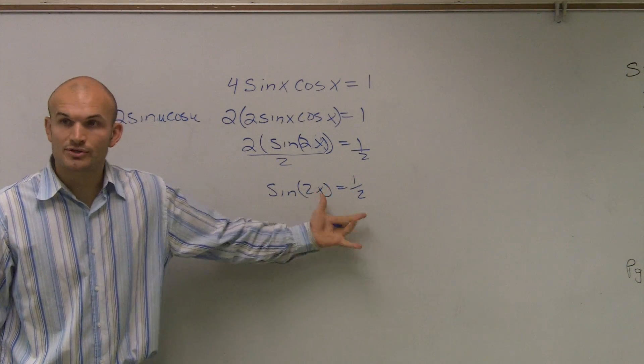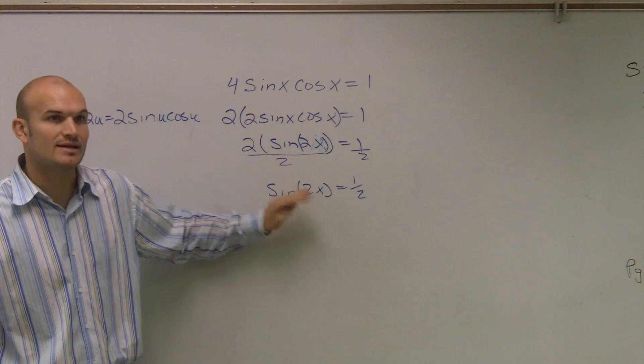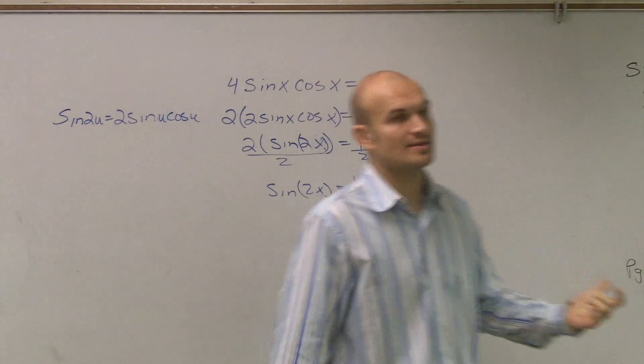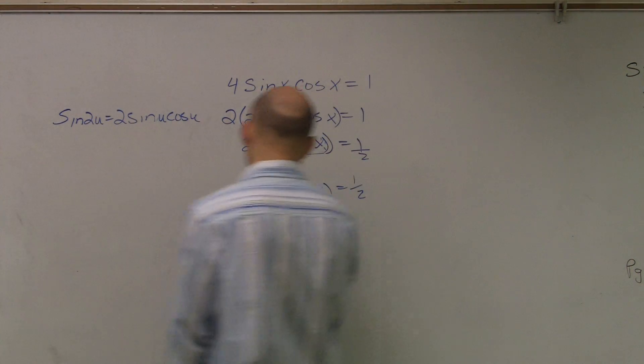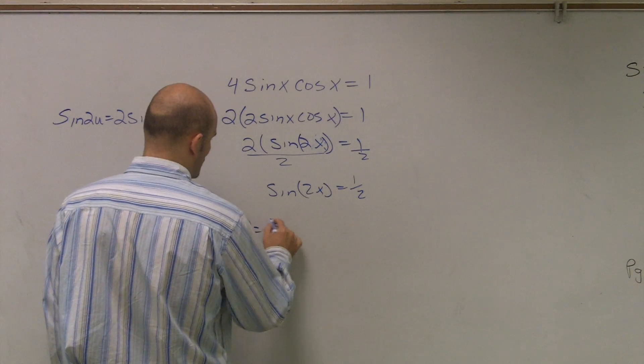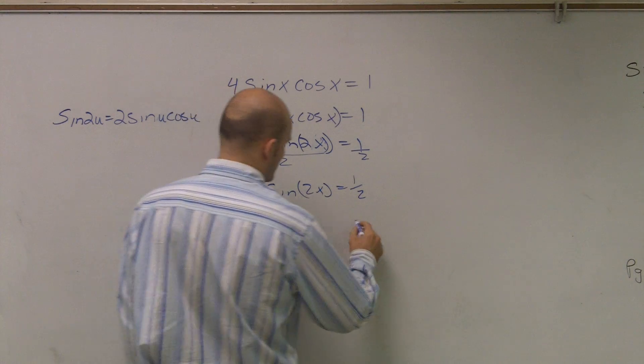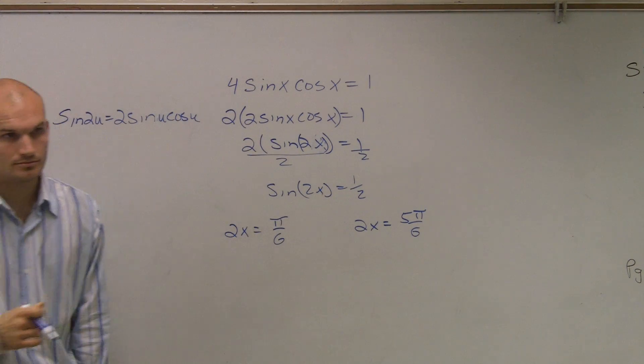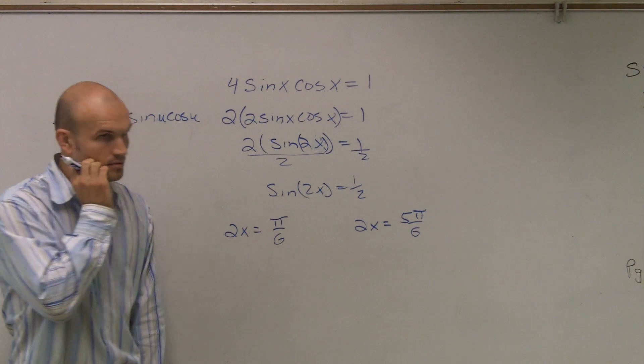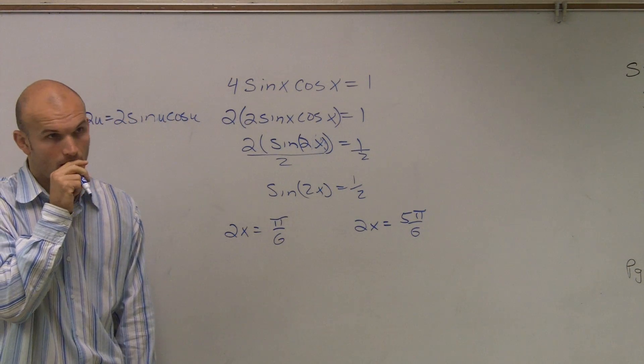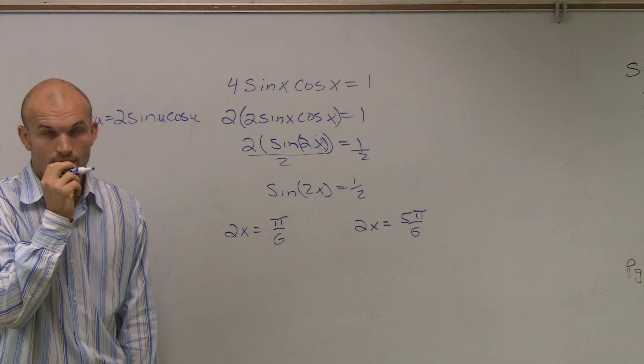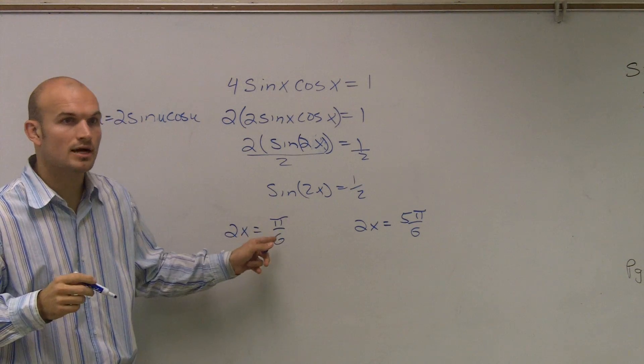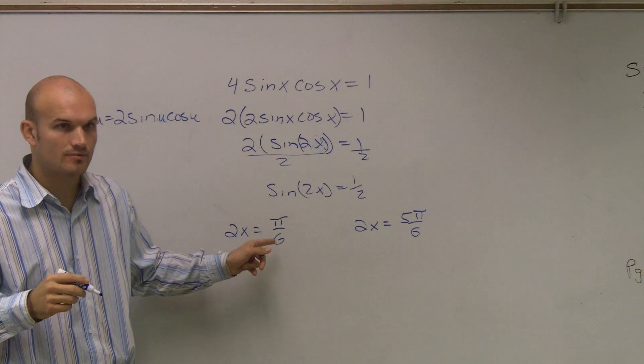So remember, now when we're doing this, we don't do anything with that 2x until the end. Now we need to find the value of sine of 1 half. So I take a look and I think, all right, when does sine equal to 1 half? So I can say 2x equals pi over 6 and 2x equals 5 pi over 6.